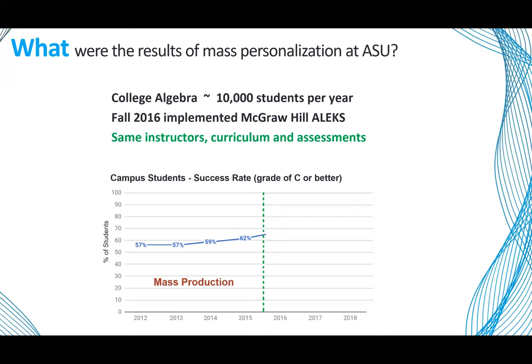We have over 10,000 students in college algebra every year with over 50 faculty members. When we shifted from the traditional mass production process to mass personalization, our success rate increased by 17 percentage points in the first three years. That translates to over 1,500 additional students successfully completing college algebra — using the same instructors, same curriculum, and same assessments. The transformation was in the pedagogy and the technology, using ALEKS.